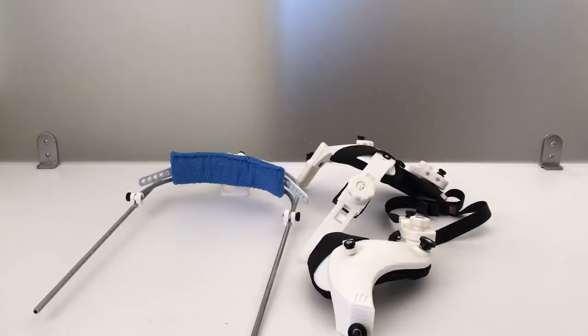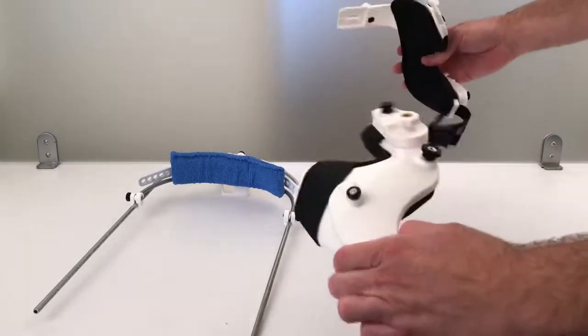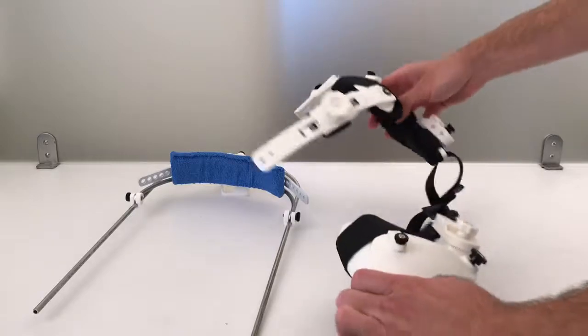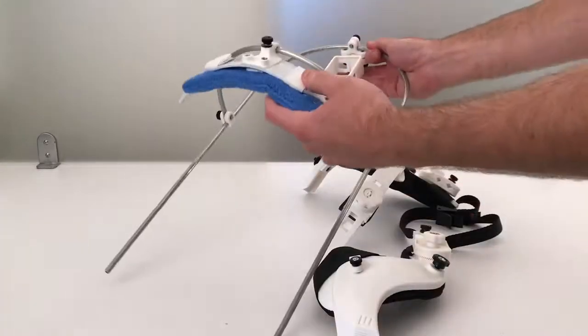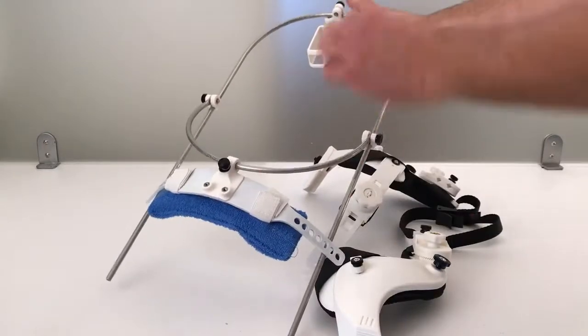When you receive your helmet, it will be in three pieces, packed flat for shipping. You've got your helmet here in two pieces joined with a chin strap, and you've got your boom arm assembly with the forehead strap on it and the camera case attached.